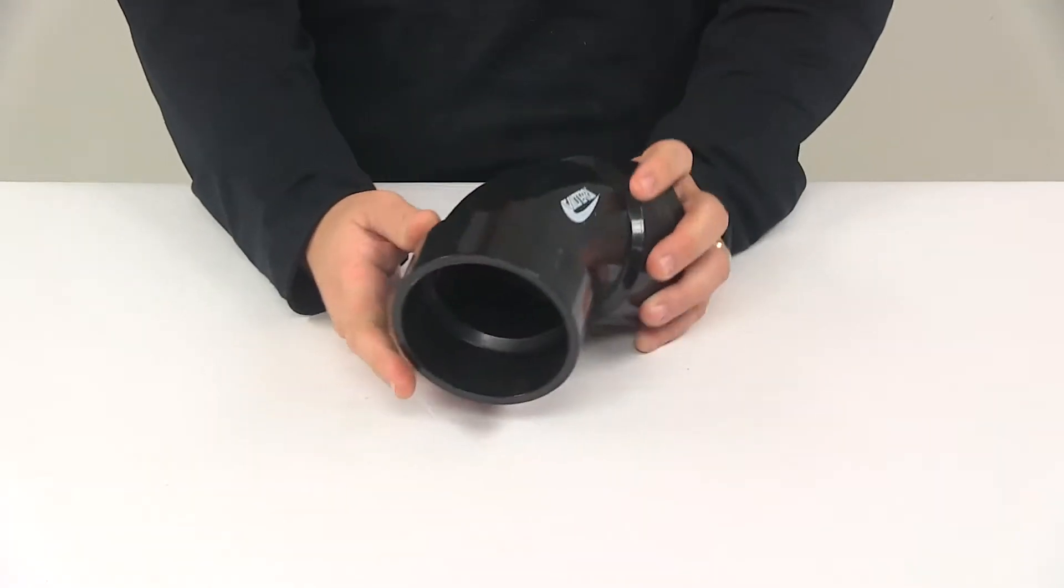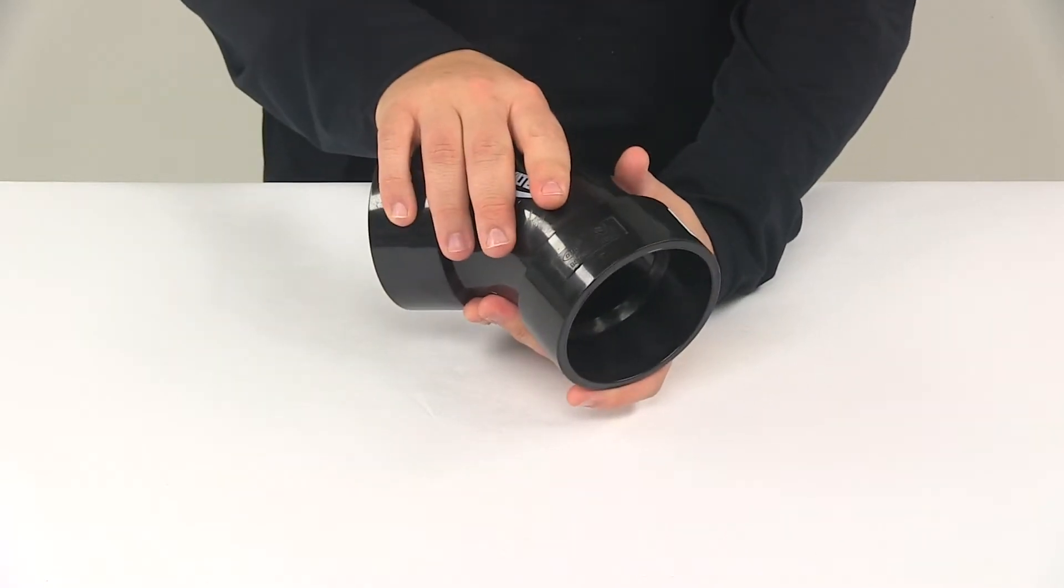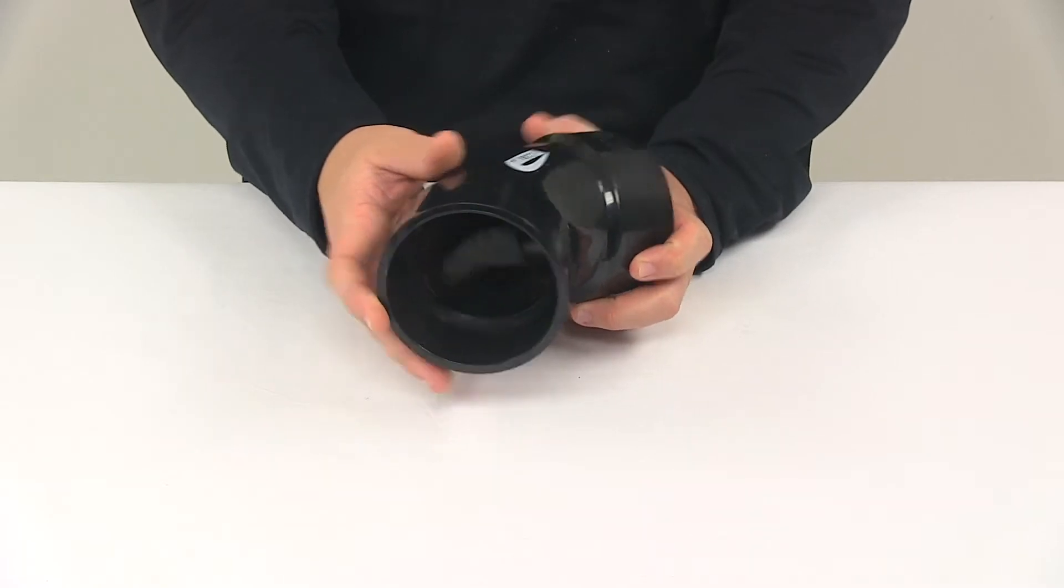Again, this is a fitting that's made from a durable ABS plastic construction. It's got the 45 degree bend and it's got the three inch hubs located on both ends.